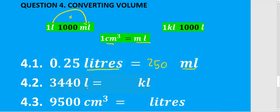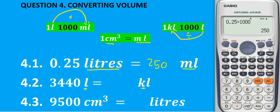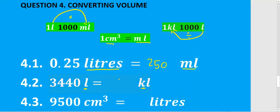For 4.2 we need to convert liters to kiloliters. We're going backwards so we divide. Take 3,440 and divide by 1000, which gives us 3,44 kiloliters.